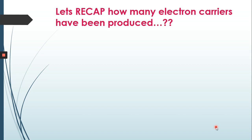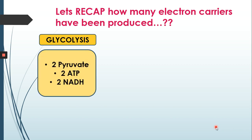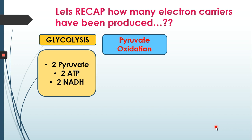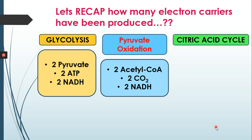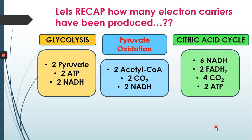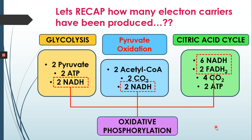Let's recap how many electron carriers have been produced in the previous stages for the breakdown of one molecule of glucose. In glycolysis: two pyruvate, two ATP, and two NADH. In the link reaction (pyruvate oxidation): two acetyl-CoA, two CO2, and two NADH. In the citric acid cycle: six NADH, two FADH2, four CO2, and two ATP. All the electron carriers produced from the previous stages will proceed to the last stage of aerobic cellular respiration, which is oxidative phosphorylation.